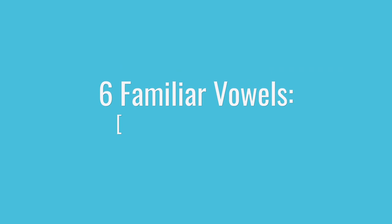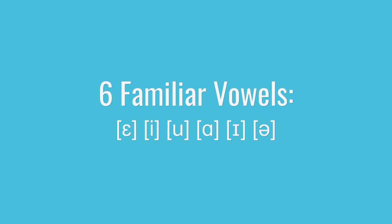So with that out of the way, let's get to Dutch. Dutch has six vowels that you're going to be pretty familiar with from English. They're E, E, U, A, I, U. The only thing really new here are the symbols.